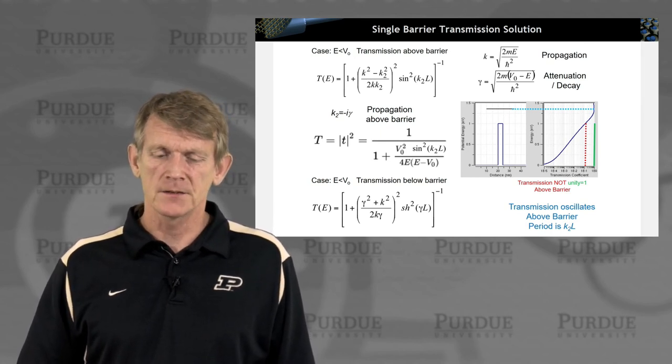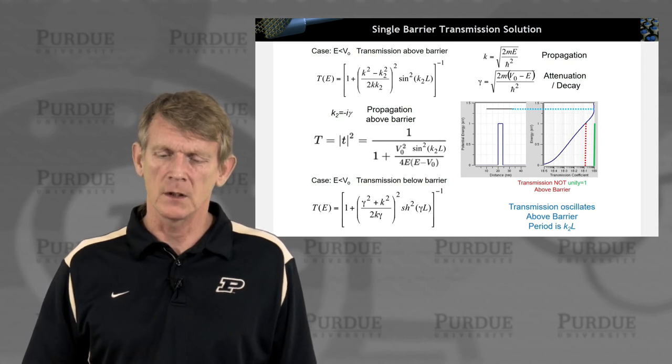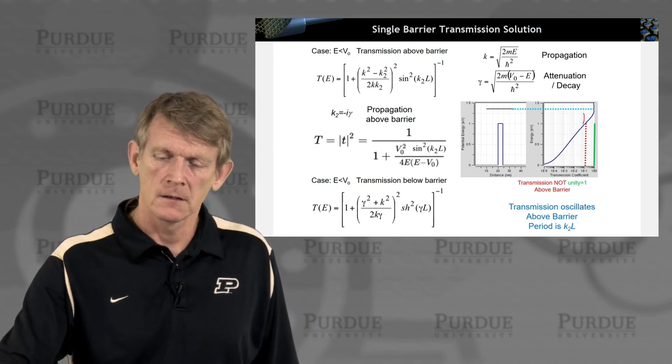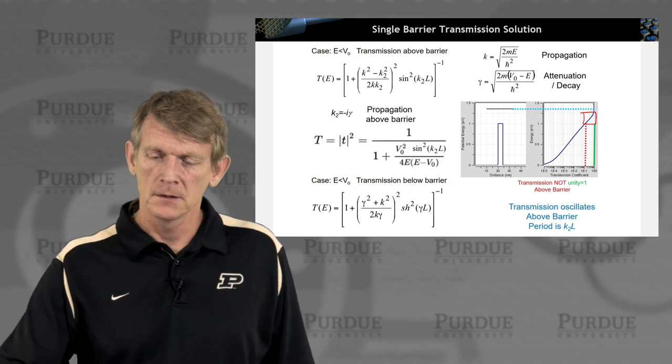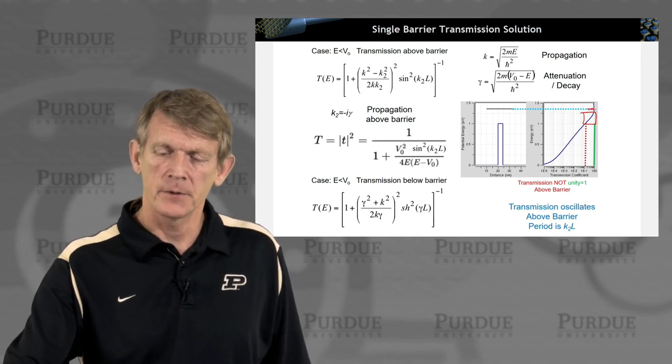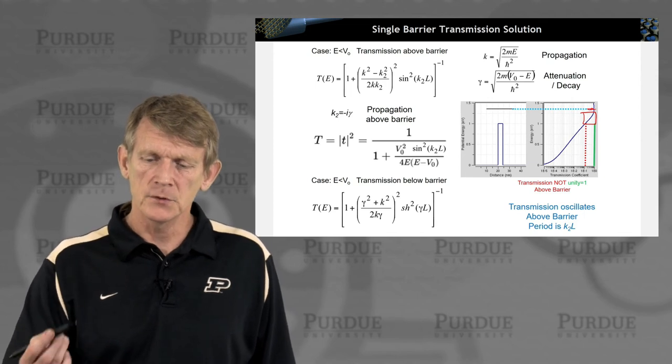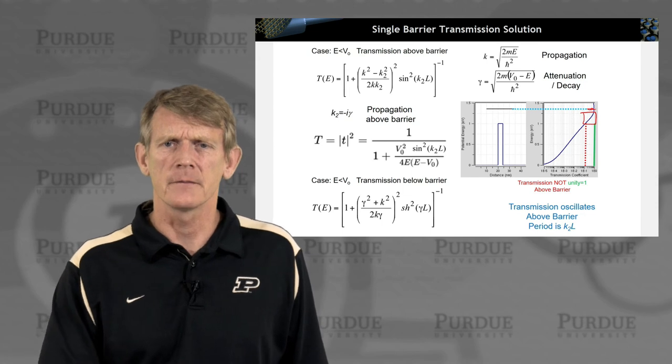In this case of a thin barrier you see, number one, the transmission above the barrier is not perfectly reaching 1. It's reaching 1 at a specific energy up here that is way above the barrier, and then it seems to be going down again. So the transmission oscillates above the barrier.